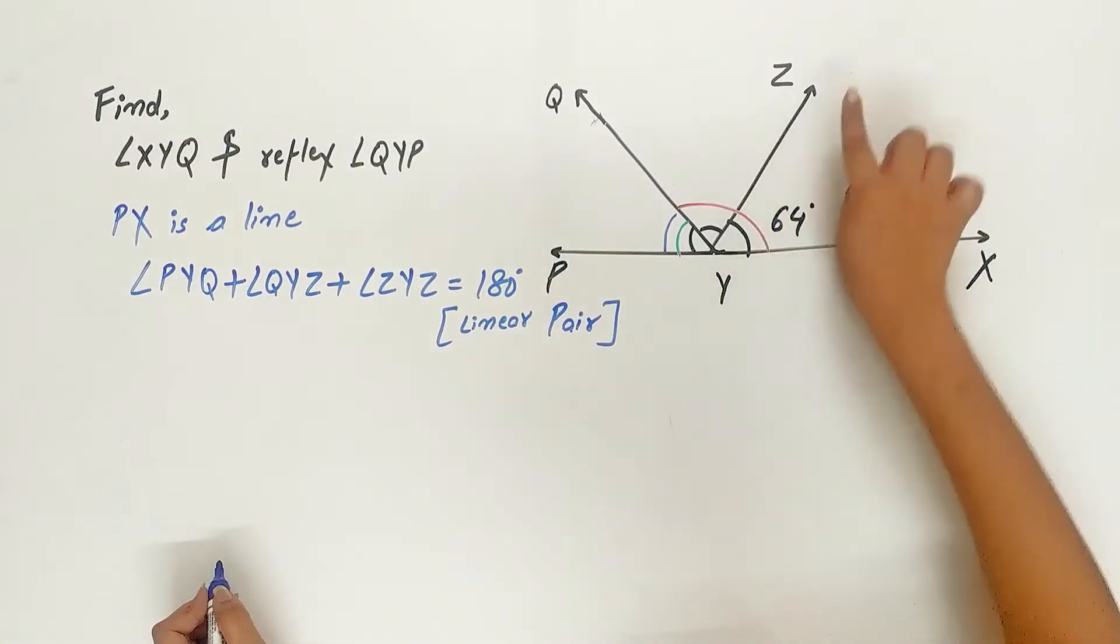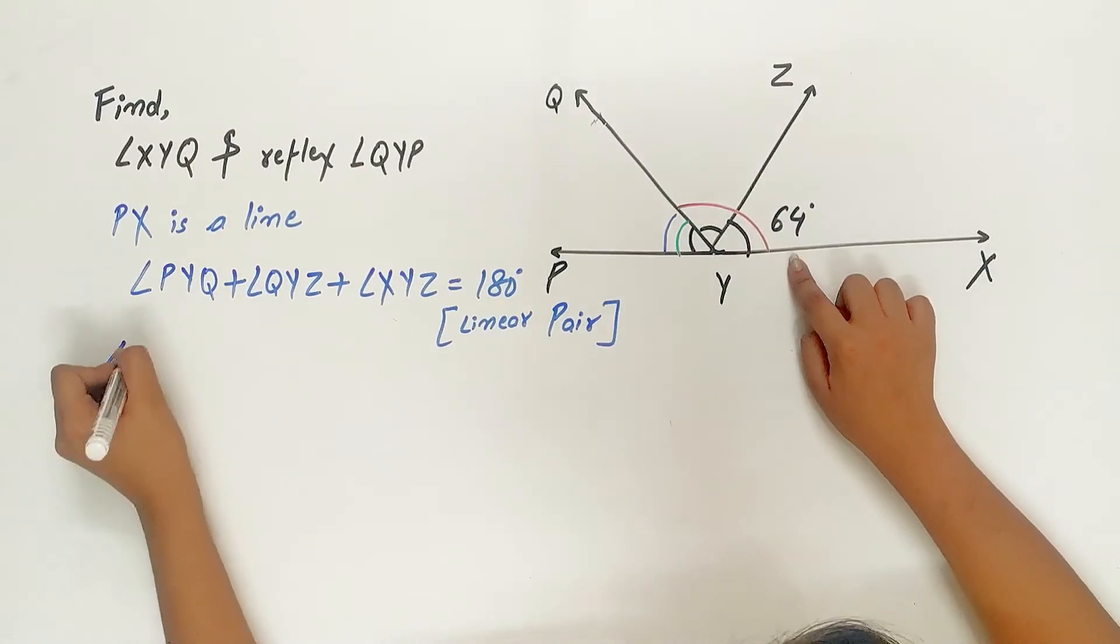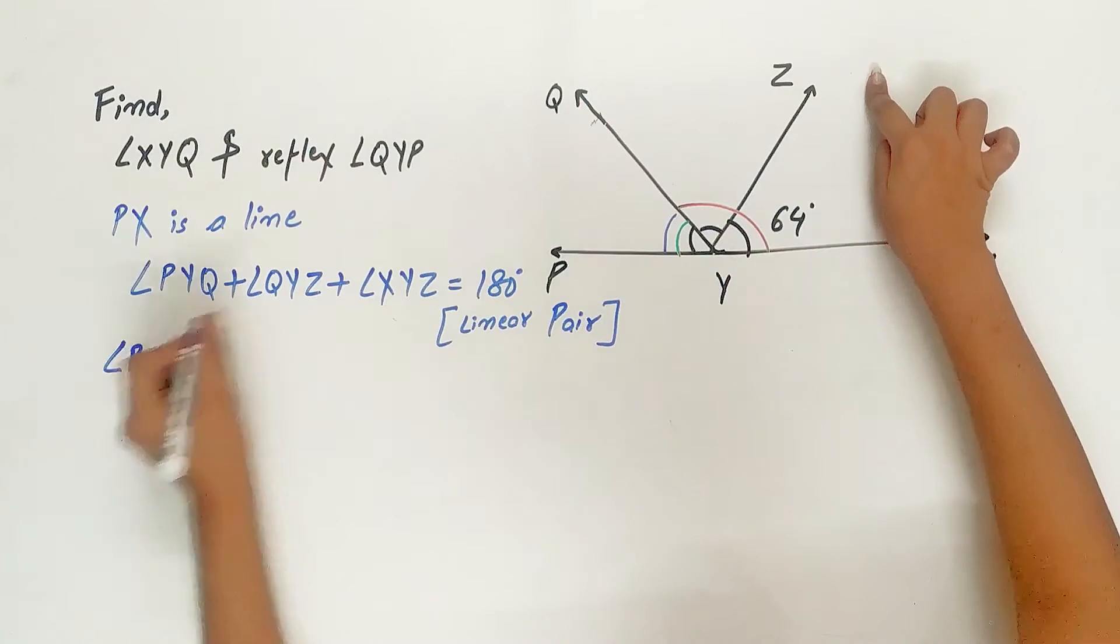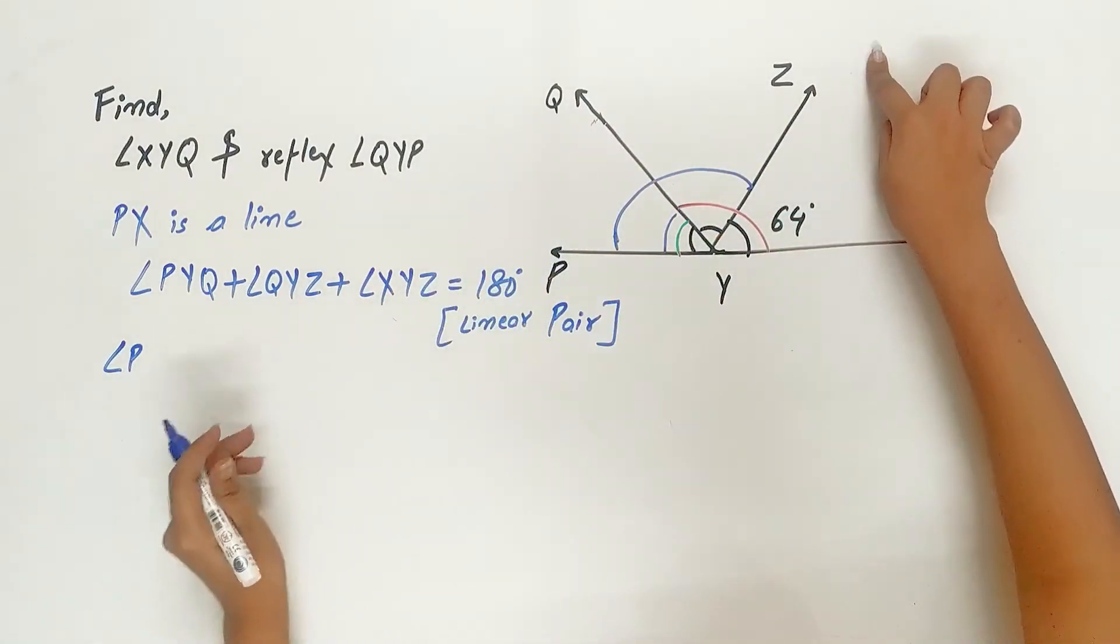Angle XYZ is equal to 64 degrees. And angle PYQ plus QYZ is equal to angle PYZ. Isn't it?